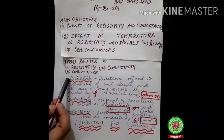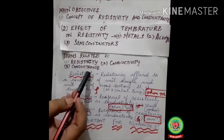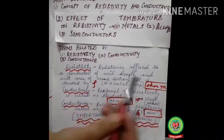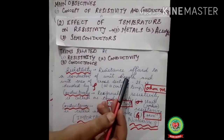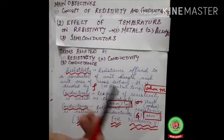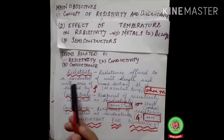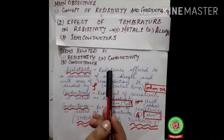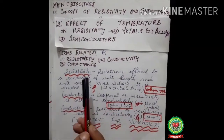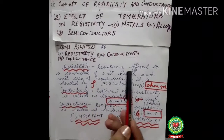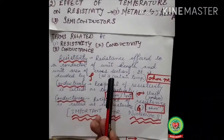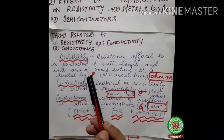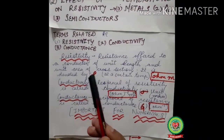Now let's start with resistivity. Resistivity is basically resistance, but it is offered to the conductor having unit length — say one meter — and unit area of cross section, say one centimeter square. So the answer: resistivity is the resistance offered to a conductor of unit length and unit area of cross section, but it should be at a constant temperature, because with a change in temperature, resistivity changes.